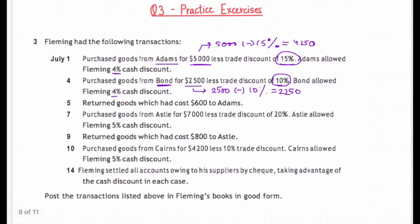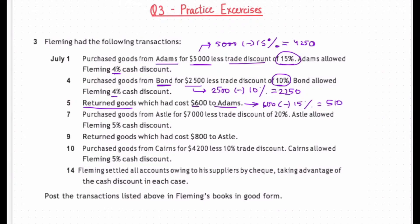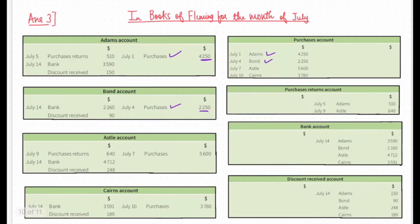July 5th — Fleming returned goods which had cost $600 to Adams. When Fleming purchased the goods from Adams, the trade discount was applicable. Therefore, while returning the goods, the trade discount needs to be adjusted. It will be $600 minus 15%, which will be $510. The entry will be Adams account debit to Purchase Returns.